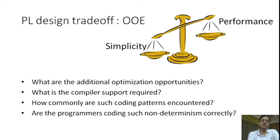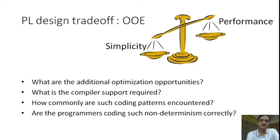We are particularly interested in the order of evaluation semantics of the C programming language, and we address the following questions: What are the additional optimization opportunities enabled by C's OOE semantics and the associated non-determinism? What compiler support is required to realize this opportunity? How commonly are such coding patterns encountered? And are programmers coding such non-determinism correctly, or is it a source of programming errors?